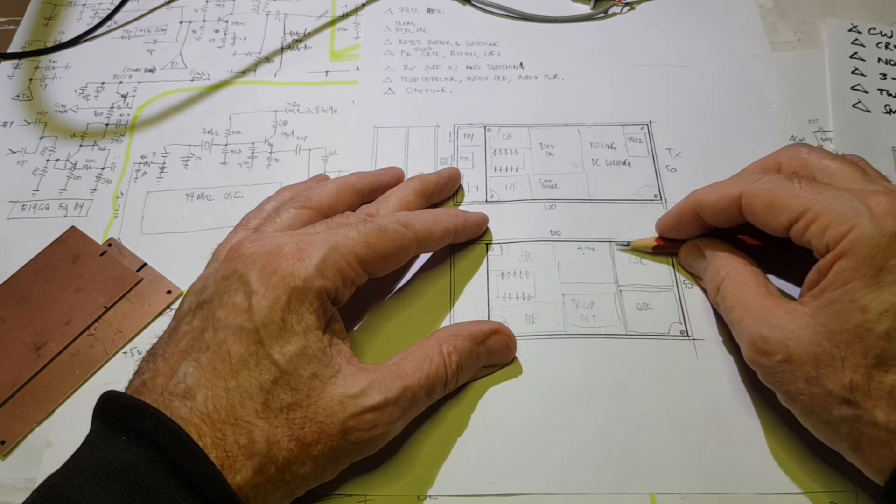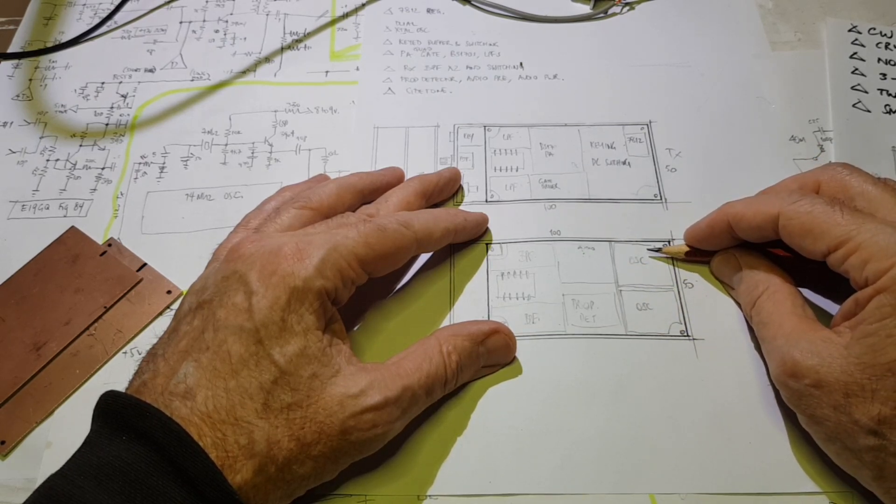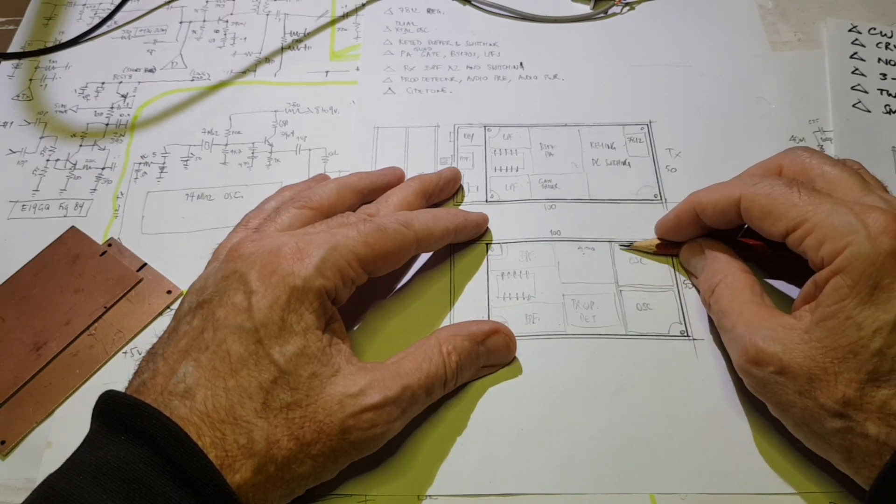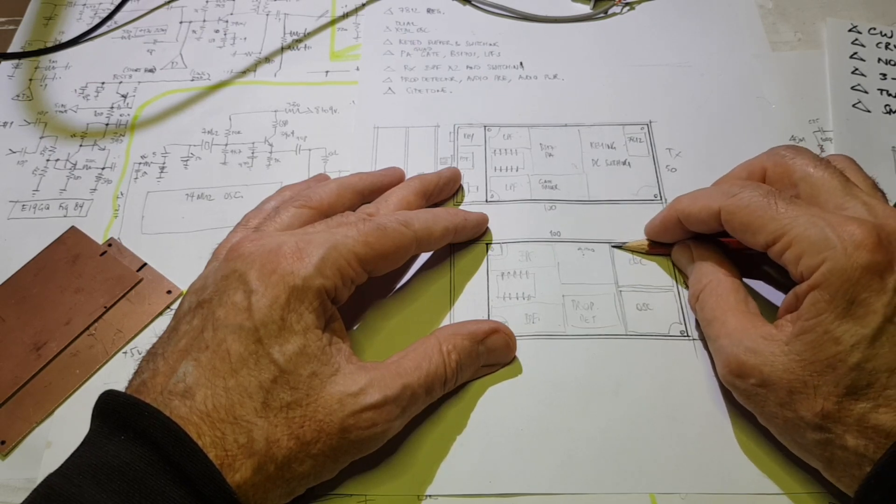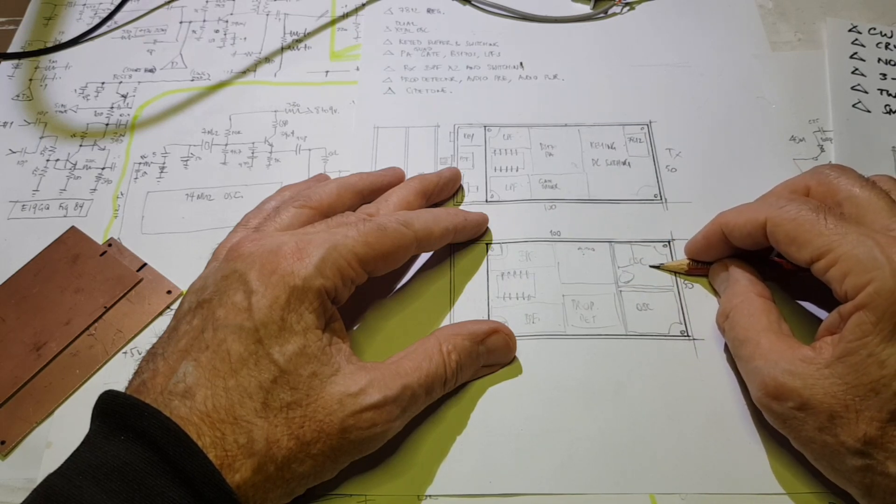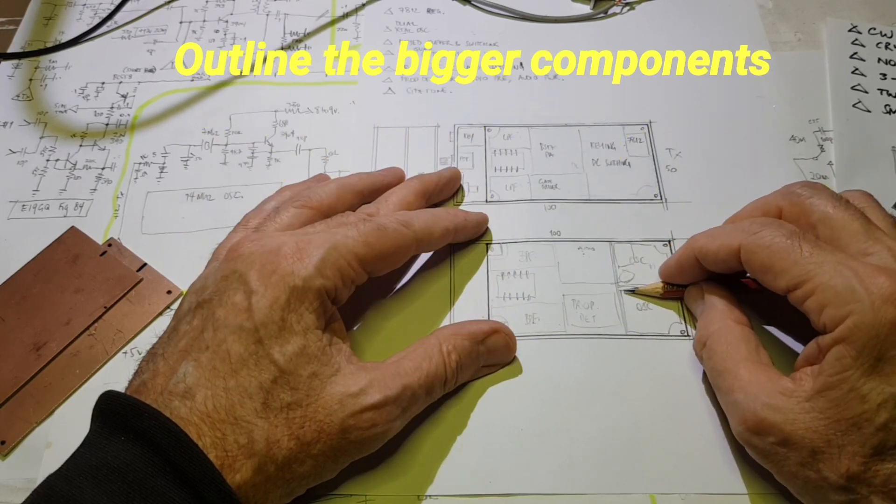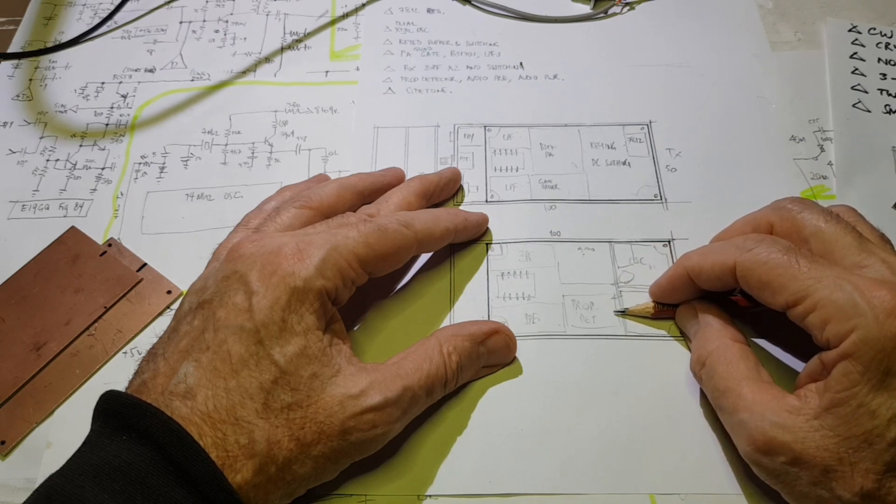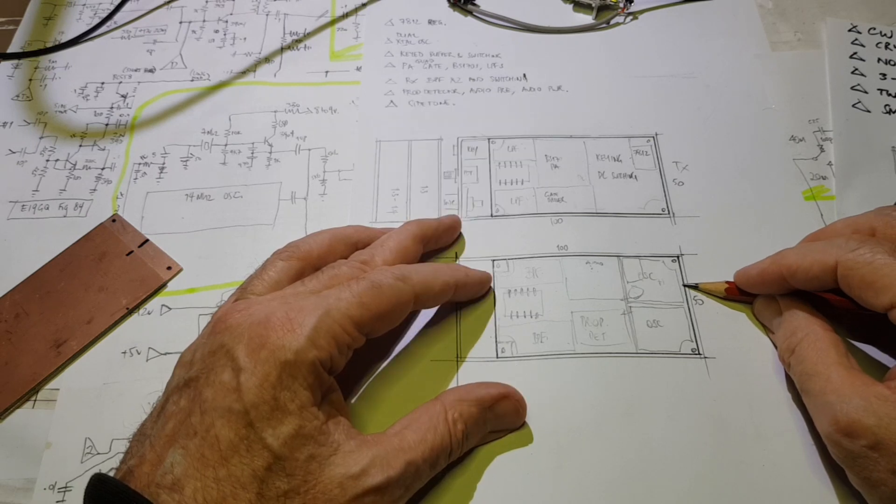This back section will have the two oscillators. They need a bit of space because my crystals are HC6U, not surface mount. The crystal and the trimmer are going to take up quite a lot of space. The crystal will probably go here, the trimmer here, and then the surface-mount oscillator. Maybe I can arrange a mirror image so signals are coming this way onto a bus into the product detector. I might be nuts trying to get all this into such a small space.